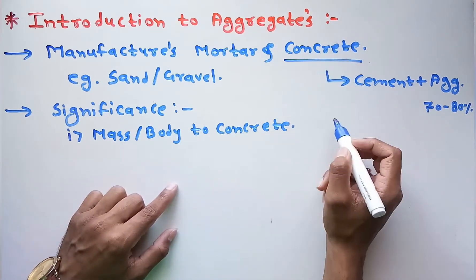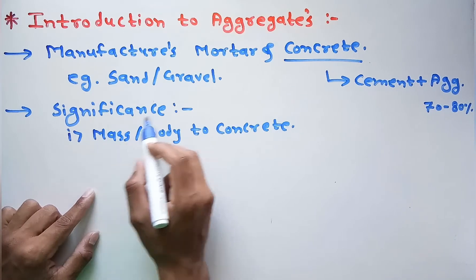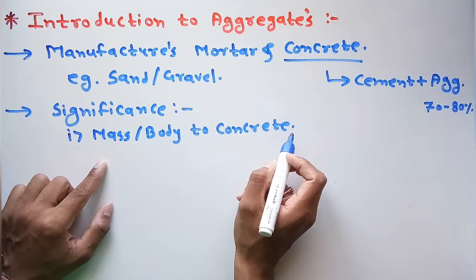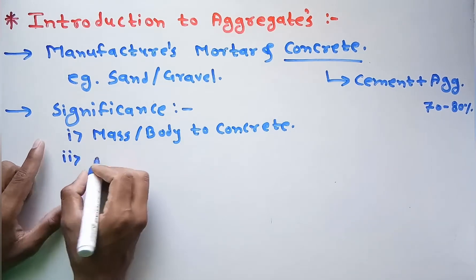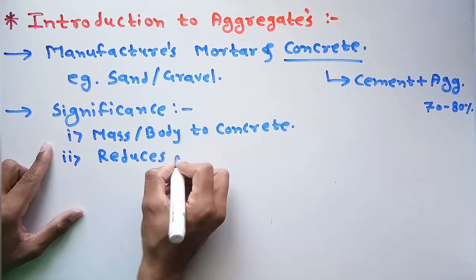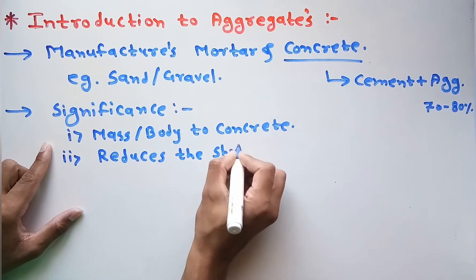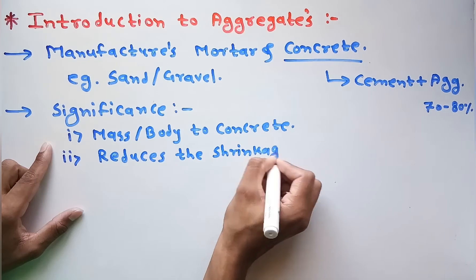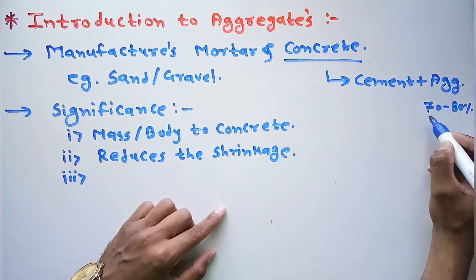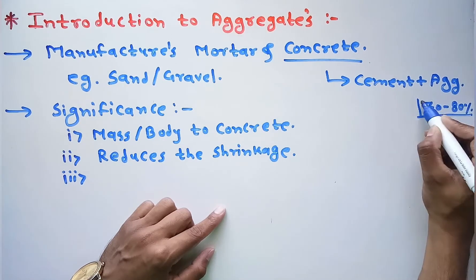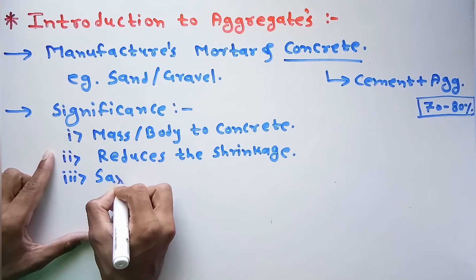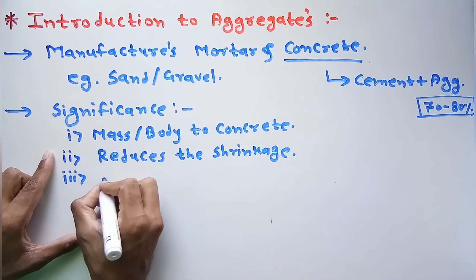Concrete gets densified due to the use of aggregates — that is why aggregates give mass or body to the concrete. The second significance is that aggregates reduce the shrinkage. Also, since aggregates constitute around 70 to 80 percent of concrete, using them saves economy and makes the concrete mix economical.